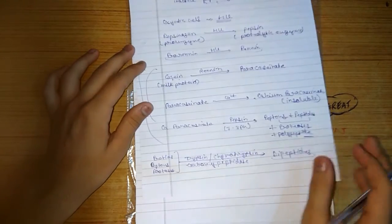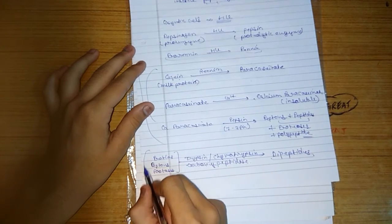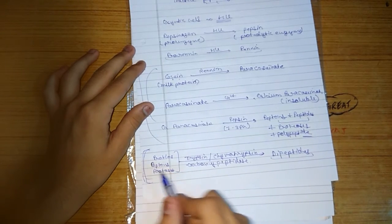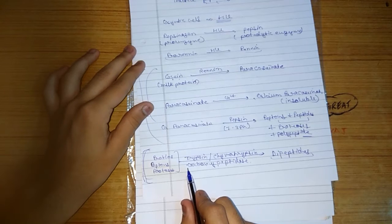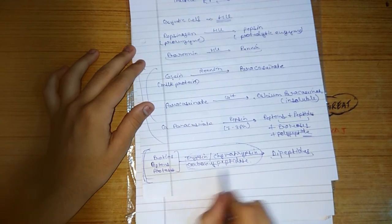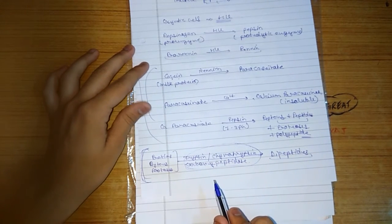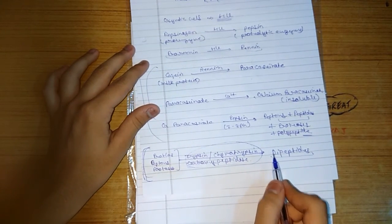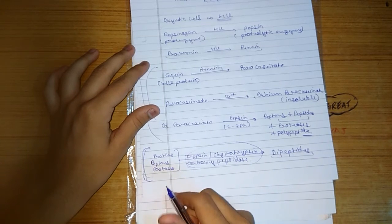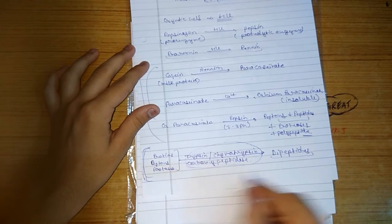These dipeptides are converted by the succus entericus, the intestinal juice which consists of dipeptidase enzyme which converts dipeptides into amino acids.